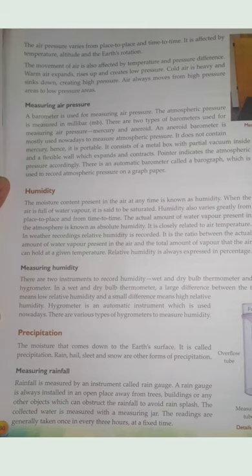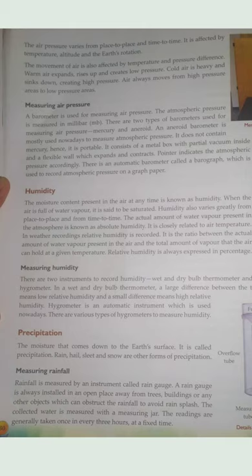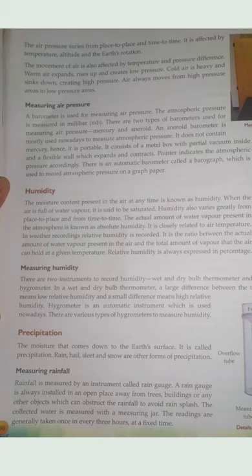When the air is warm, low pressure is created. When the temperature is cold, high pressure is created. At low sea level the air pressure is high; as we climb higher the air pressure decreases. Due to the rotation of the earth, winds are deflected. Warm air from the equator moves towards the poles, creating low pressure at the equator and high pressure at the cold poles, and the winds circulate back towards the equator.